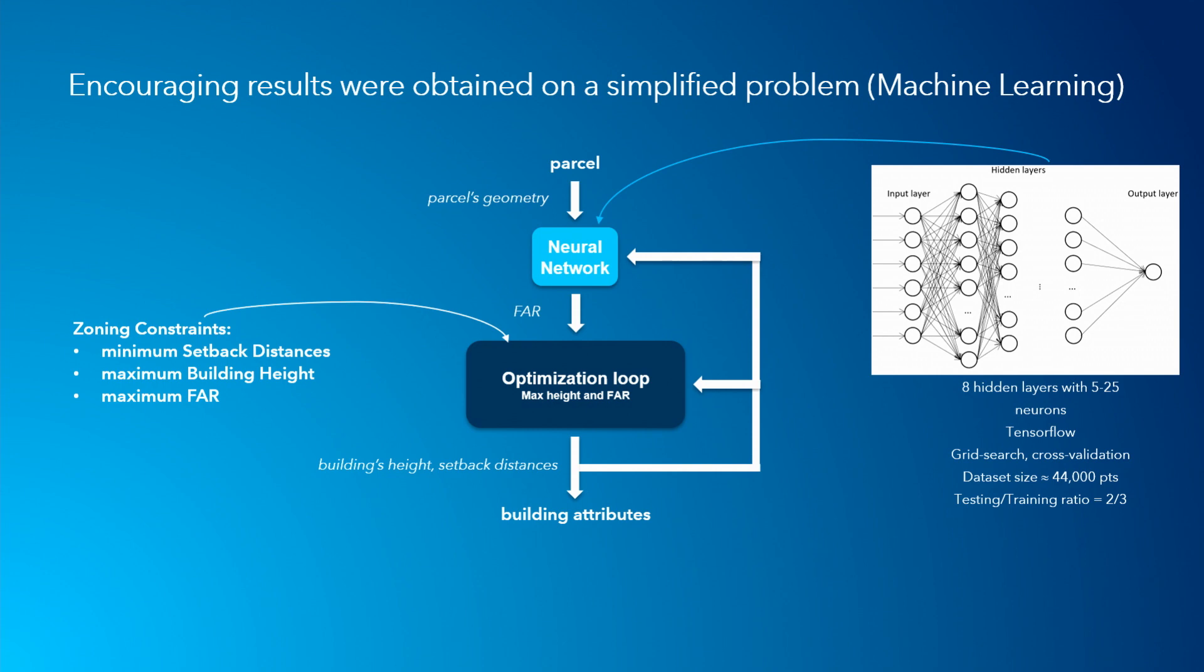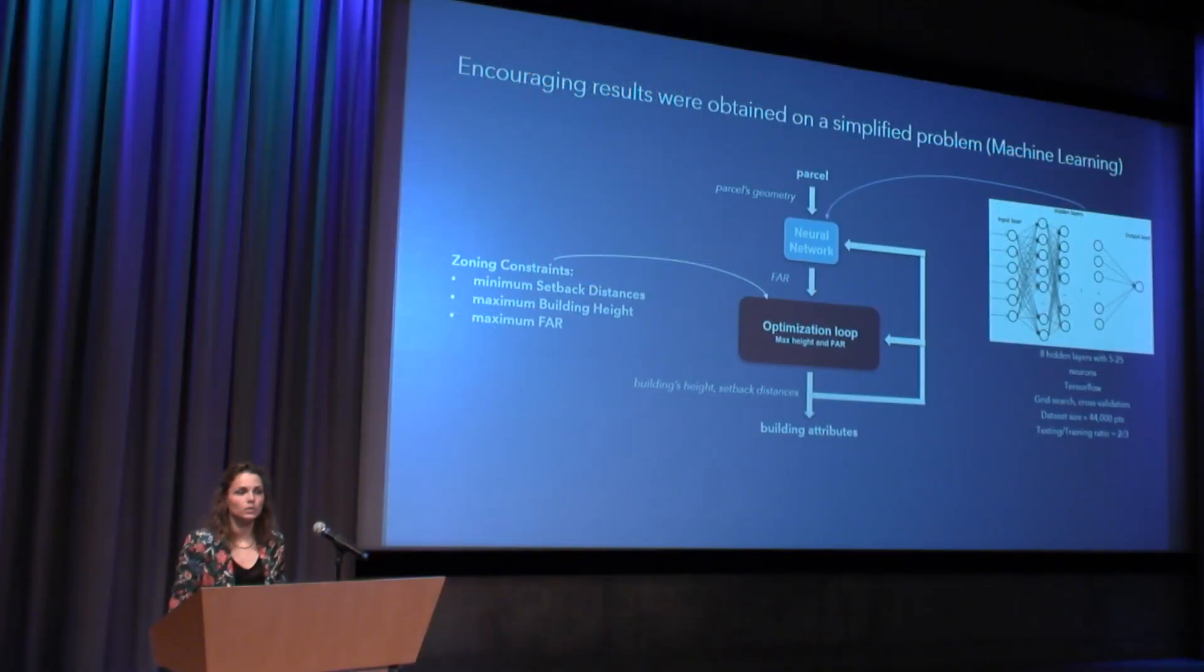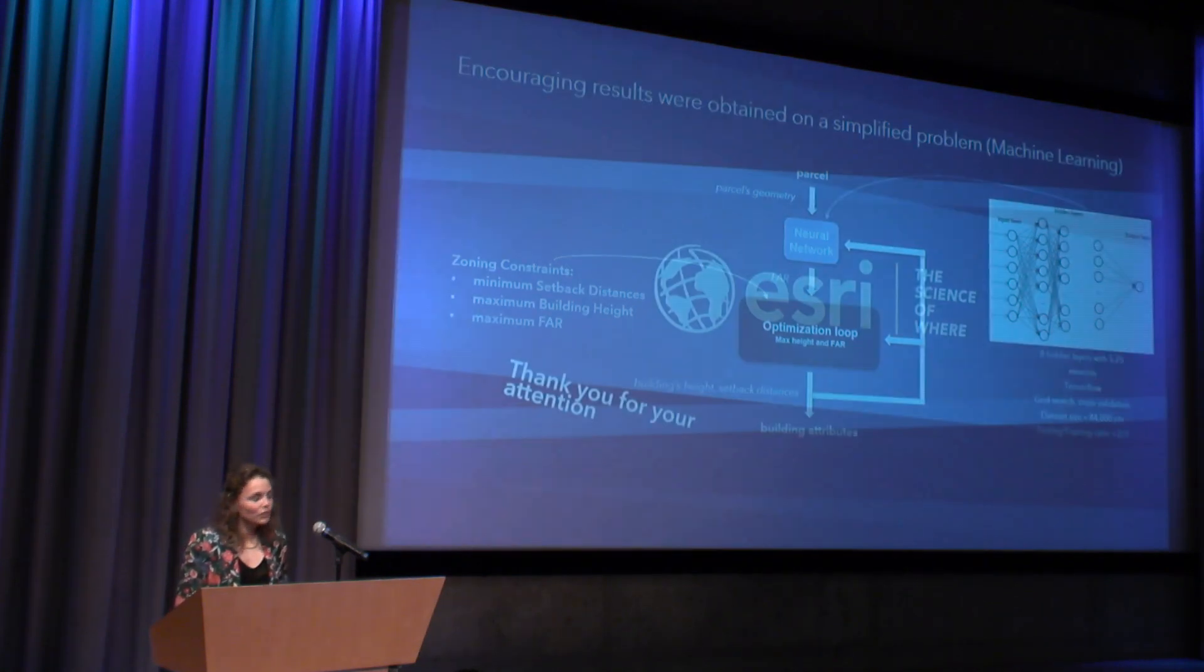So yeah, in conclusion, we'll use machine learning or deep learning methods in order to model complex variables, complex systems, and implement a constraint multi-objective optimization algorithm in order to compute the best building attributes. Thanks for your attention.